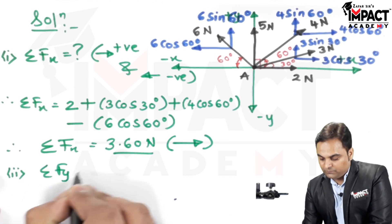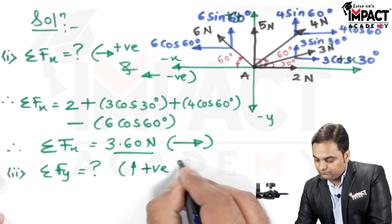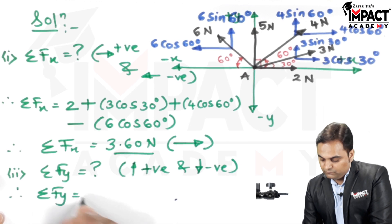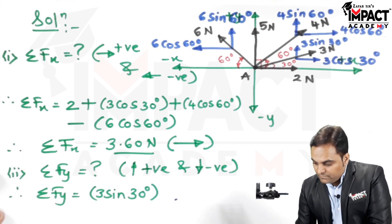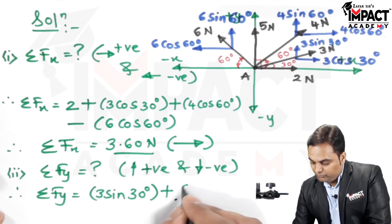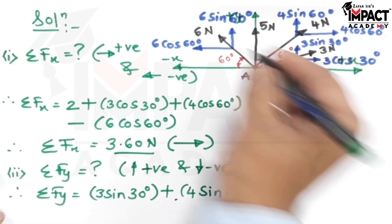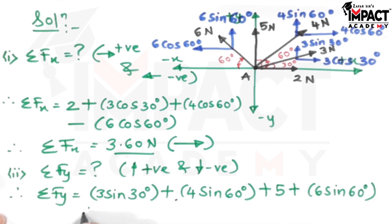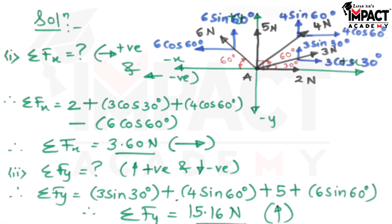Next, summation Fy needs to be calculated, where upward forces are positive and downward forces are negative. We have 3 sin 30 acting upward (positive), 4 sin 60 acting upward (positive), then 5 newton as the purely vertical force (positive), and 6 sin 60 also acting upward (positive). Adding up all these values gives summation Fy equal to 15.16 newton, and since it is positive it is acting in the upward direction.